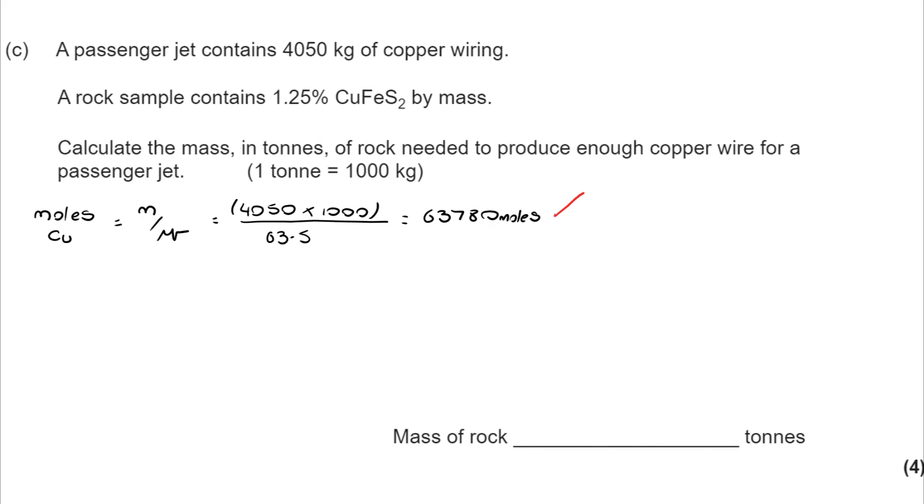So that means that I would need 63,780 moles of CuFeS2. So I've got the moles, I can find its MR. And from there, I can work out its mass. Now, finally, I know that that's the mass of CuFeS2 that I would need, but that is only 1.25% of the rock that I would need to extract from.